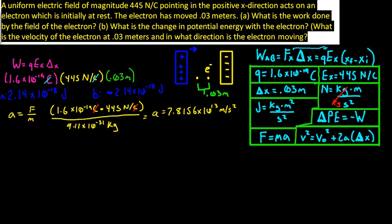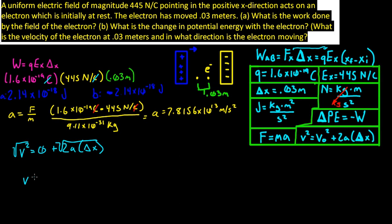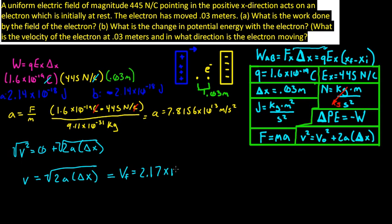Now we can set up the kinematics equation: V squared equals V-naught squared plus 2 times acceleration times delta x. The initial velocity is zero, so we take the square root: V equals the square root of 2 times acceleration times delta x. The final velocity is 2.17 times 10 to the 6th meters per second, and that's how you solve this problem.